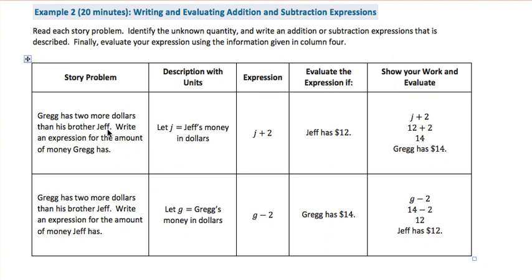Greg has two more dollars than his brother Jeff. We're going to write an expression for the amount of money Greg has. So j is going to equal Jeff's money in dollars. Because Greg has two more than that, j plus 2 will represent what Greg has. Jeff has 12 dollars, so we substitute 12 plus 2, find 14, and we can answer: Greg has 14 dollars.